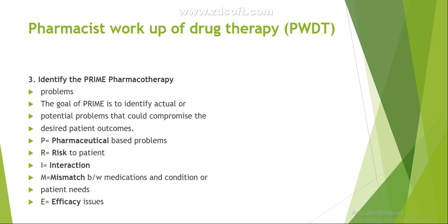The third component is to identify the PRIME pharmacotherapy problems. The goal of PRIME is to identify the actual or potential problems that could compromise the desired patient outcome. In PRIME pharmacotherapy, we identify the drug-related problems that will hinder achieving our desired patient outcome.